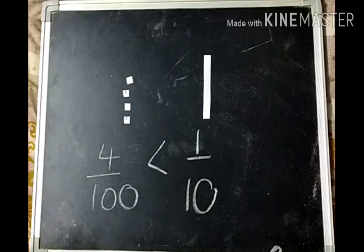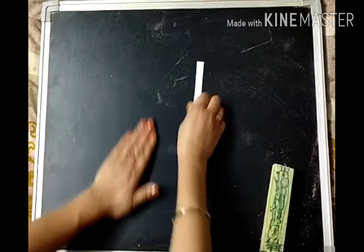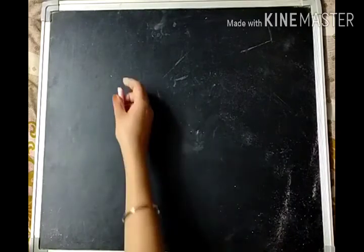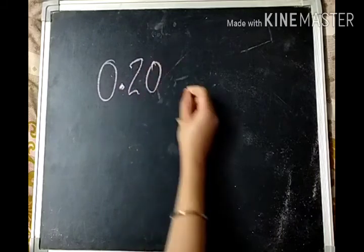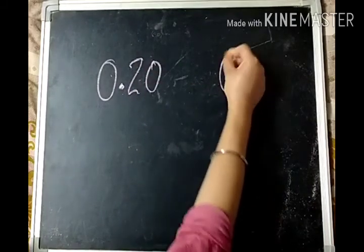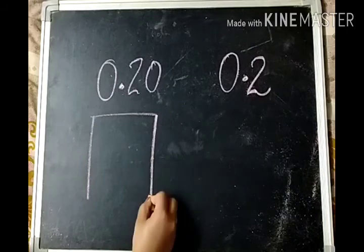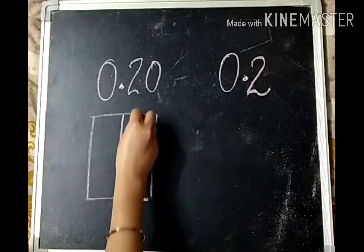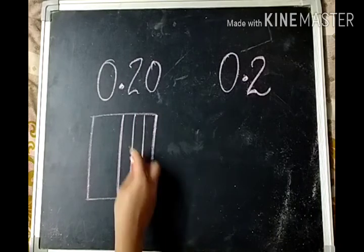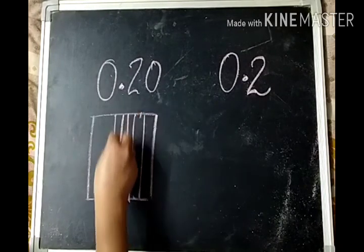So you need to make a visual for this. If I ask — if we have to compare these two: zero point two zero. So we need to make it properly using a diagram. We can make the visuals for this.